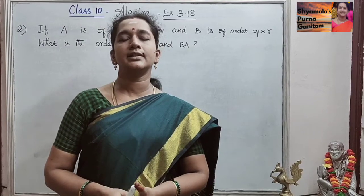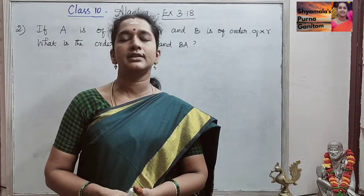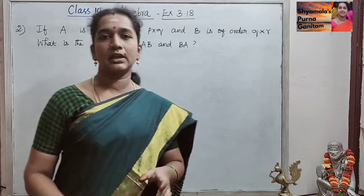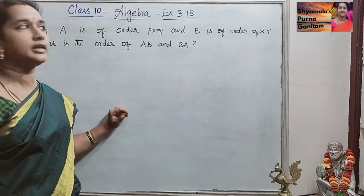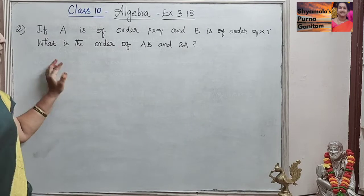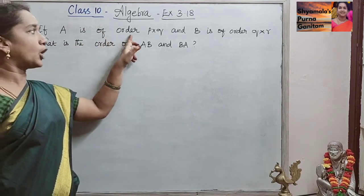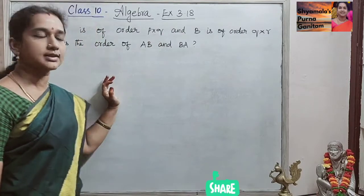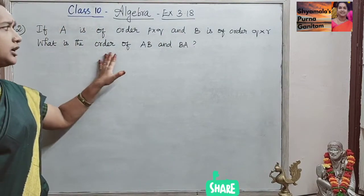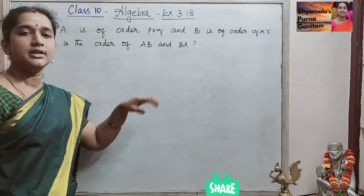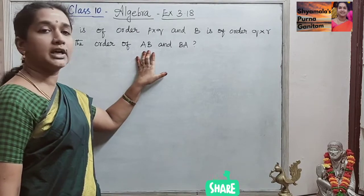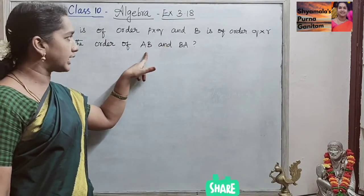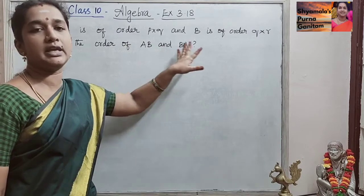Good morning students. In this class, I will be doing Class 10 Samacheer Kalvi syllabus, or matriculation syllabus, 3rd chapter algebra, Exercise 3.18, second sum. If A is of order P cross Q and B is of order Q cross R, what is the order of AB and BA? We are asked to find the product of the two matrices — that is AB — and in different order, BA also.